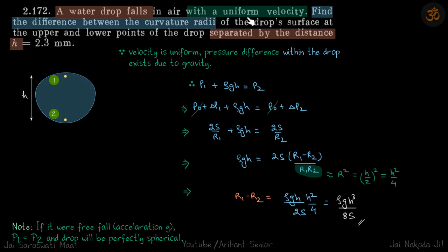The water is falling with uniform velocity, which means acceleration due to gravity exists between these two points. For example, if it were a free fall, then the effect of g will be gone, but because it's going with uniform velocity, the effect of g will be there.